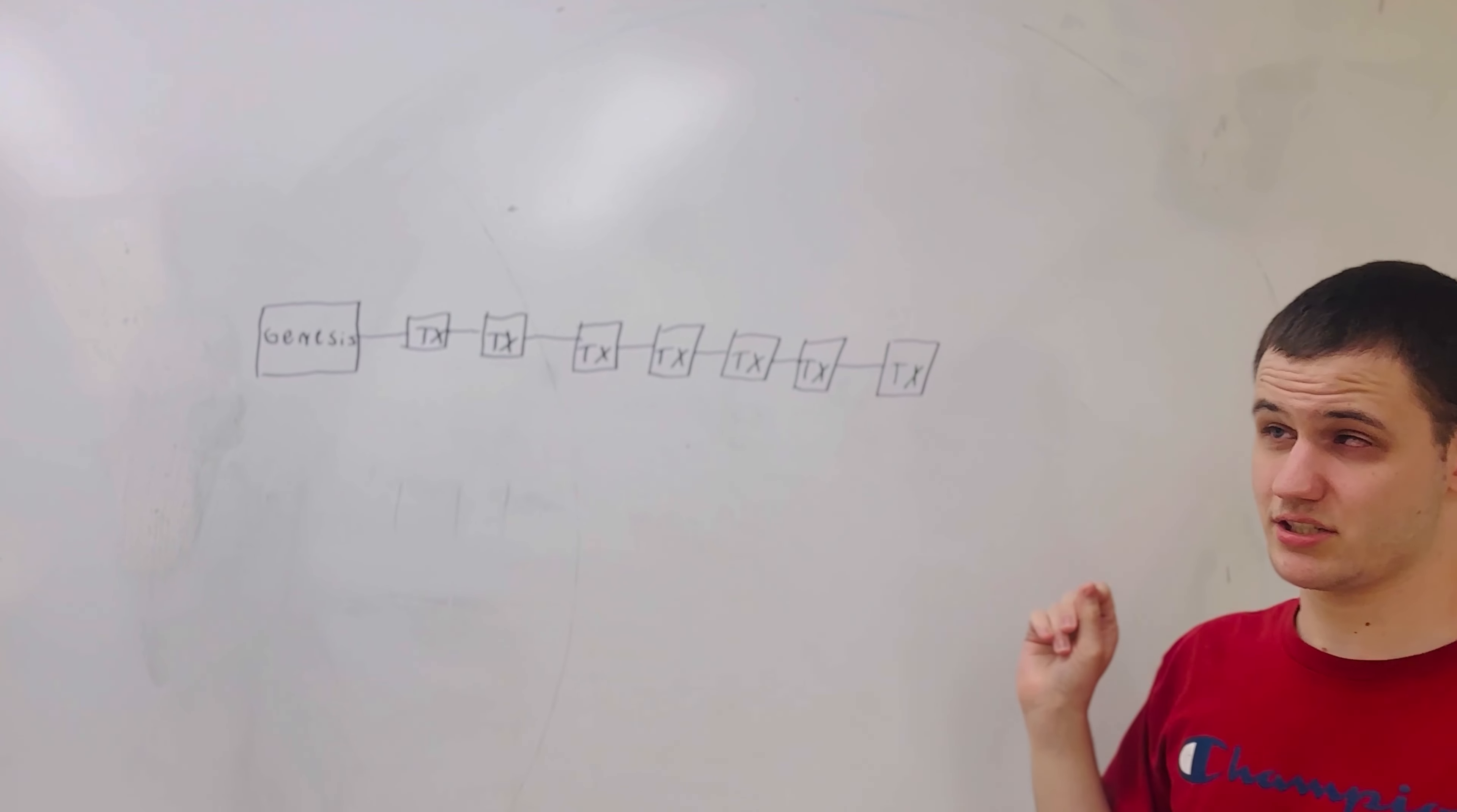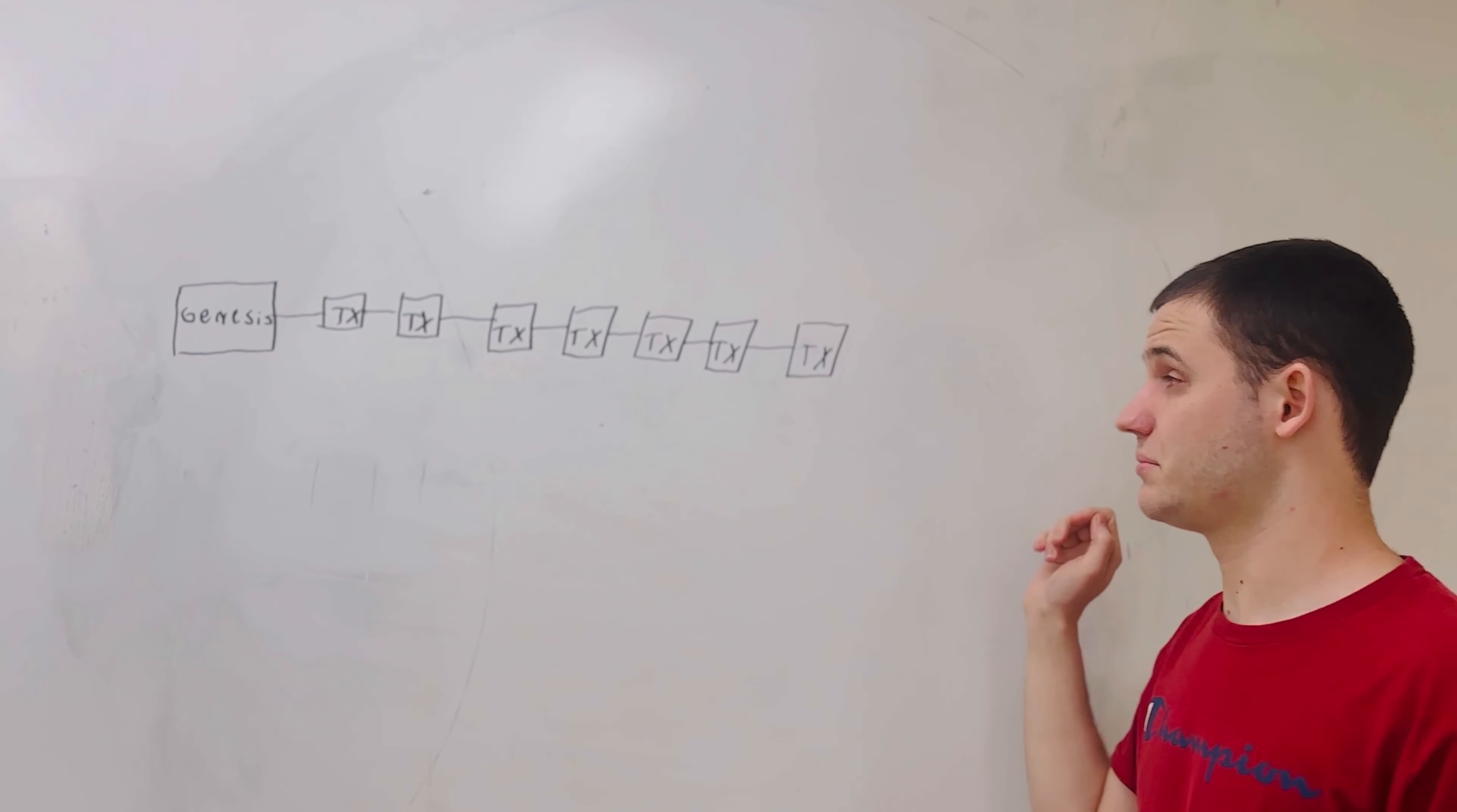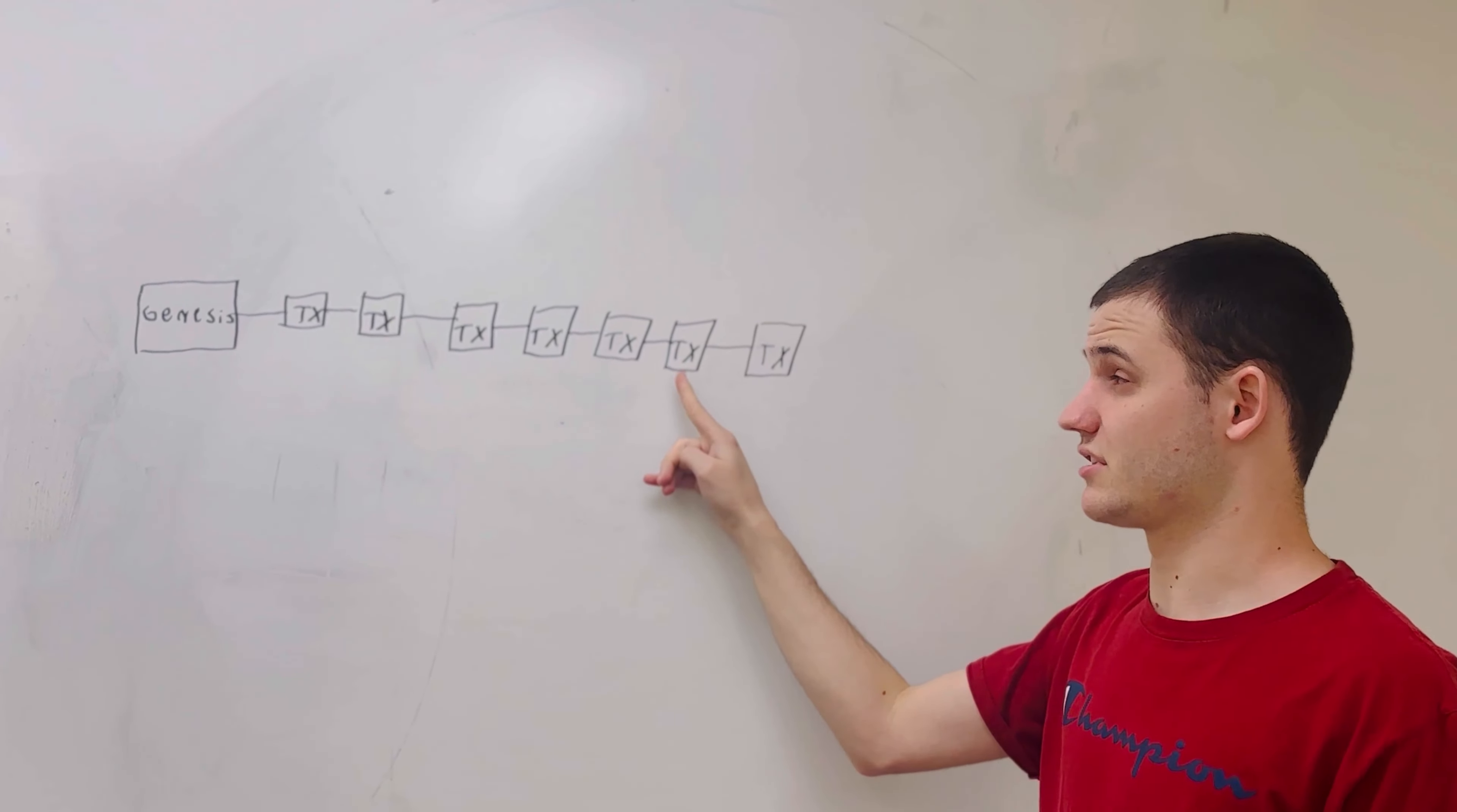So the question that someone might have, suppose this person makes a transaction and sends the token to this person, and so the second person, let's call him Bob, receives a token from the first person, let's call her Alice. And in order for Bob to know that this token is valid, Bob needs to know two things.